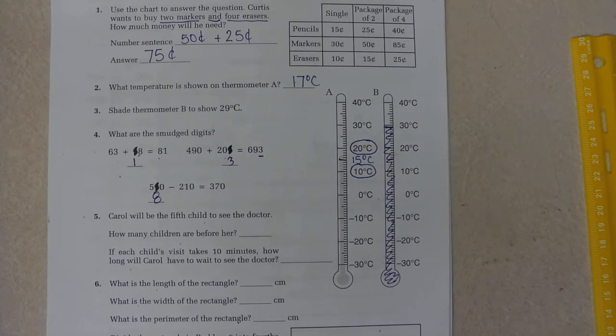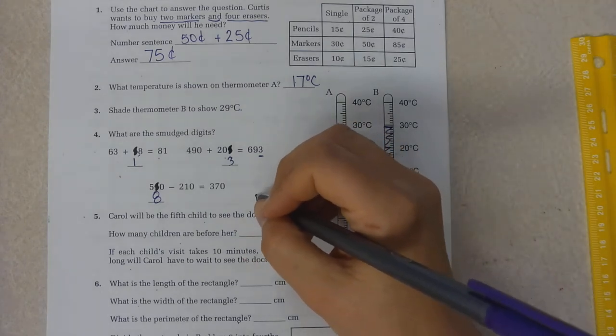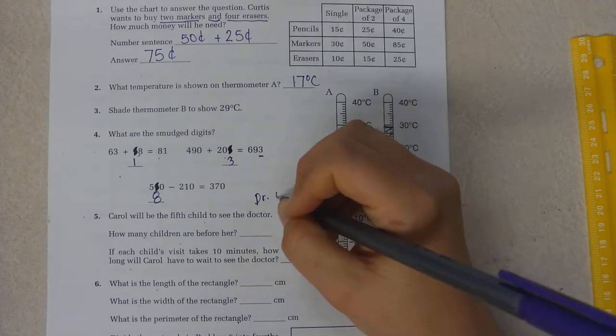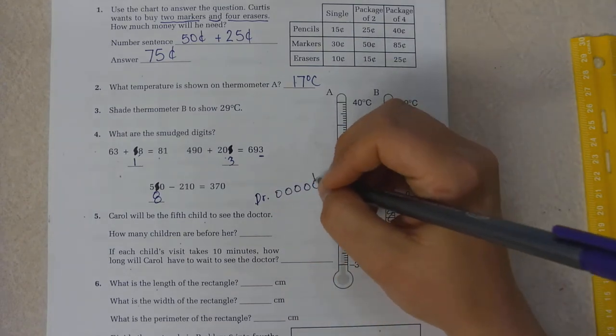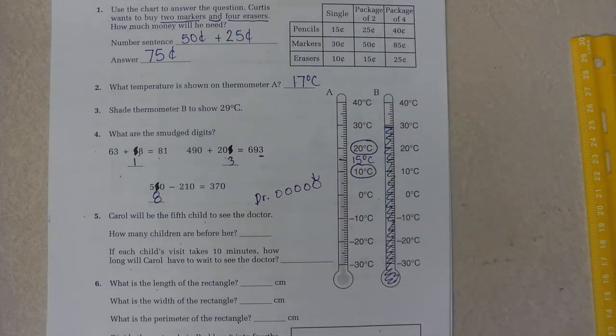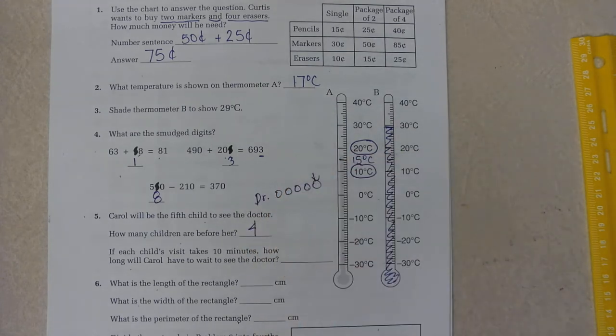Carol will be the fifth child to see the doctor. So I'm going to draw that picture. I'm going to say this is my doctor. Here's my doctor. 1, 2, 3, 4, 5. So this is going to be Carol. How many children are before her? Well, 1, 2, 3, 4. Four children.